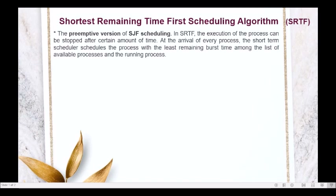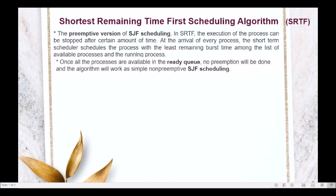Here, at the arrival of every process, the short-term scheduler schedules the process with the least remaining burst time among the available processes and the running process. Take note: once all the processes are available in the ready queue, no preemption will be done anymore and the algorithm will work as a simple non-preemptive Shortest Job First Scheduling Algorithm.